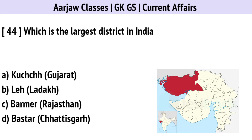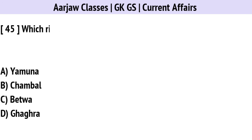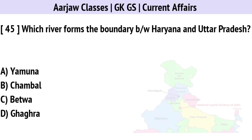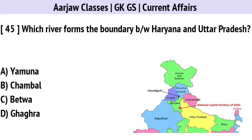Which is the largest district in India by area? Which river forms the boundary between Haryana and Uttar Pradesh? The correct option is A — Yamuna.